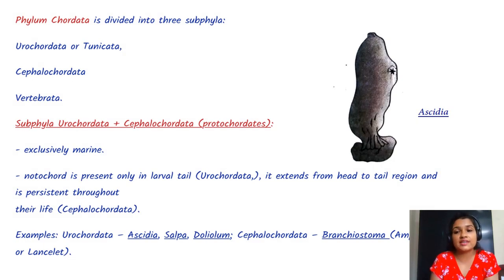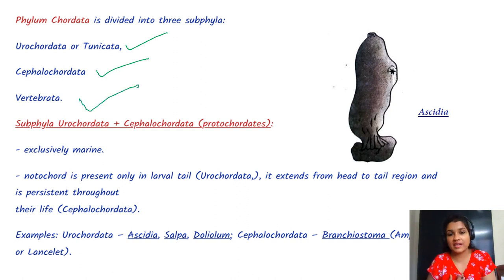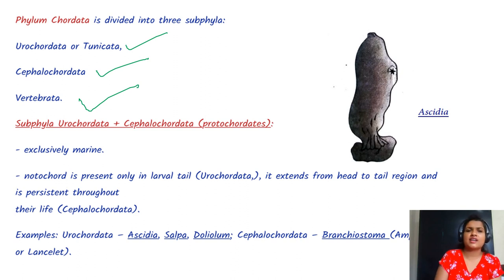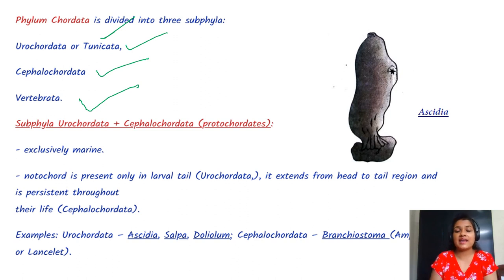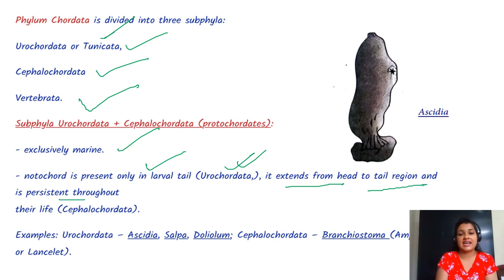Phylum Chordata is divided into three subphyla: Urochordata, Cephalochordata, and Vertebrata. Urochordata and Cephalochordata are exclusively marine. In Urochordata, the notochord is present only in the larval tail, while in Cephalochordata it extends from head to tail and persists throughout life.